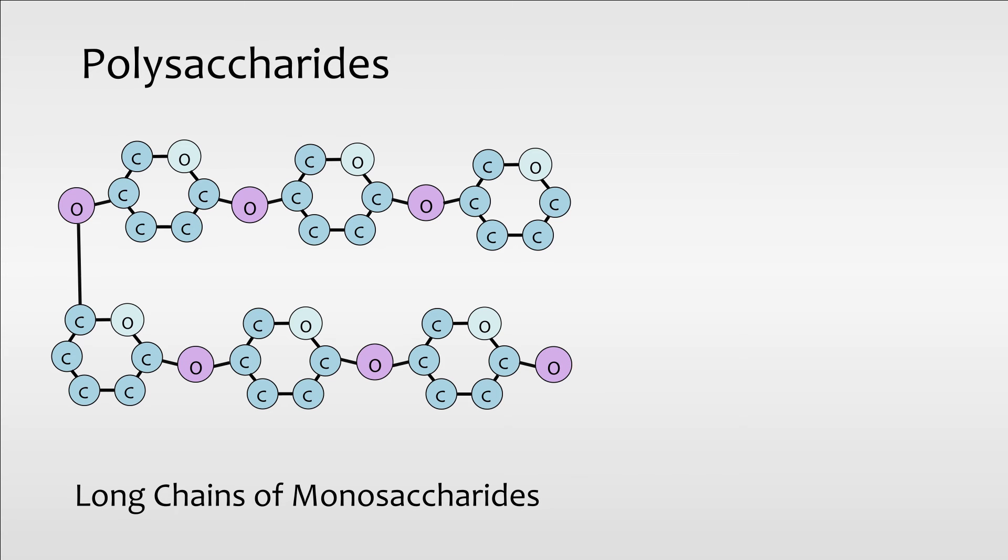There are many polysaccharides in our body, but the common molecules are glycogen, starch, and cellulose.